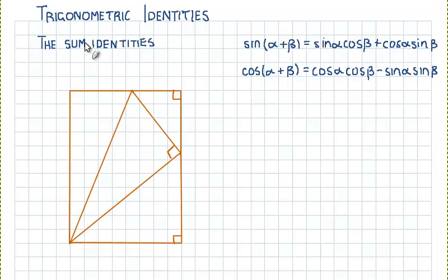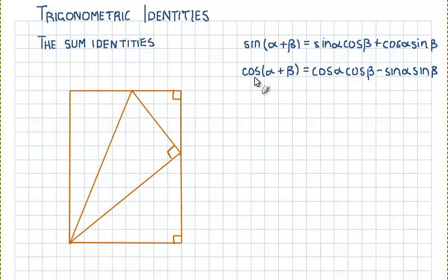In this video we will be proving the sum identities of sin(α + β), which equals sin α cos β + cos α sin β, and also the cosine sum identity, so that's cos(α + β) equals cos α cos β − sin α sin β.